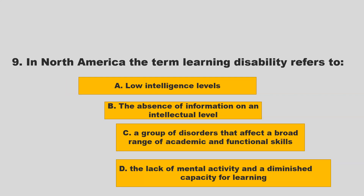In North America, the term learning disability refers to: A) low intelligence levels; B) the absence of information on an intellectual level; C) a group of disorders that affect a broad range of academic and functional skills. If you chose C — a group of disorders that affect a broad range of academic and functional skills — you are correct.